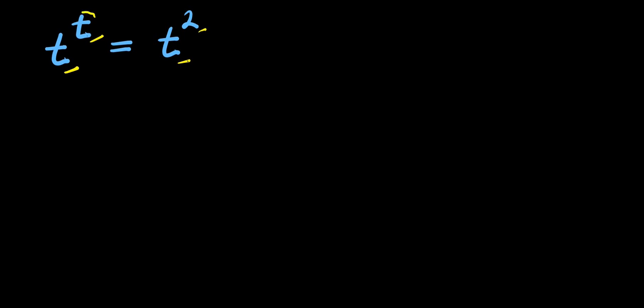Hello, we have t to the power of t and this equals t to the power of 2. We are solving for the value of t that satisfies this equation. Don't forget that the highest power of t here is 2, so we are expecting two different solutions. We are also going to represent the two solutions in a graph, so I encourage you to watch to the end.